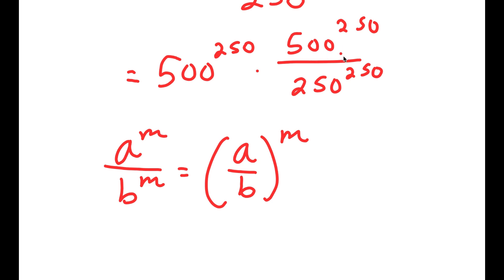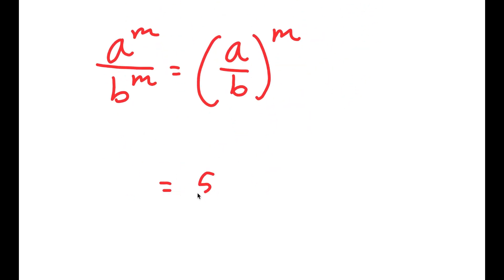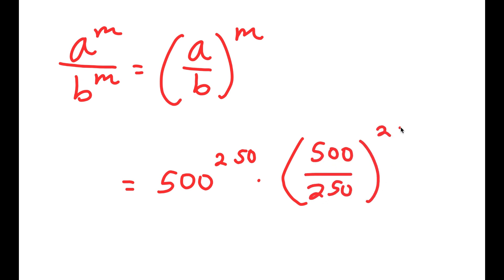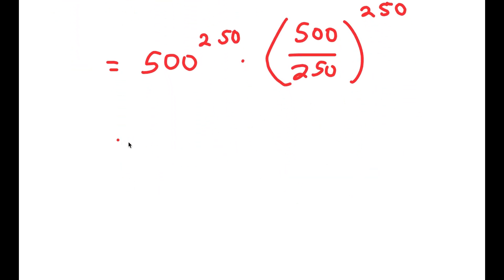So in this case, I have 500 to the power of 250 over 250 to the power of 250, and I can rewrite that as 500 over 250 to the power of 250. Now, this is equal to 500 to the power of 250 times 2 to the power of 250.